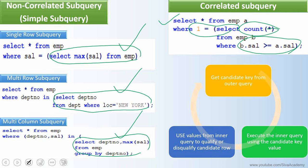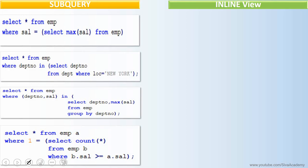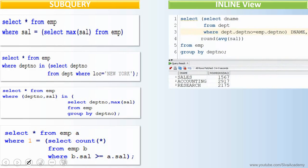There are cases where we use a subquery not just in the WHERE condition. Typically, when used in the WHERE condition, we call it a subquery — either simple or correlated. But there are many other cases where we use a subquery as part of the SELECT clause, FROM clause, HAVING clause, or other clauses. In those cases, we generally call them inline views.